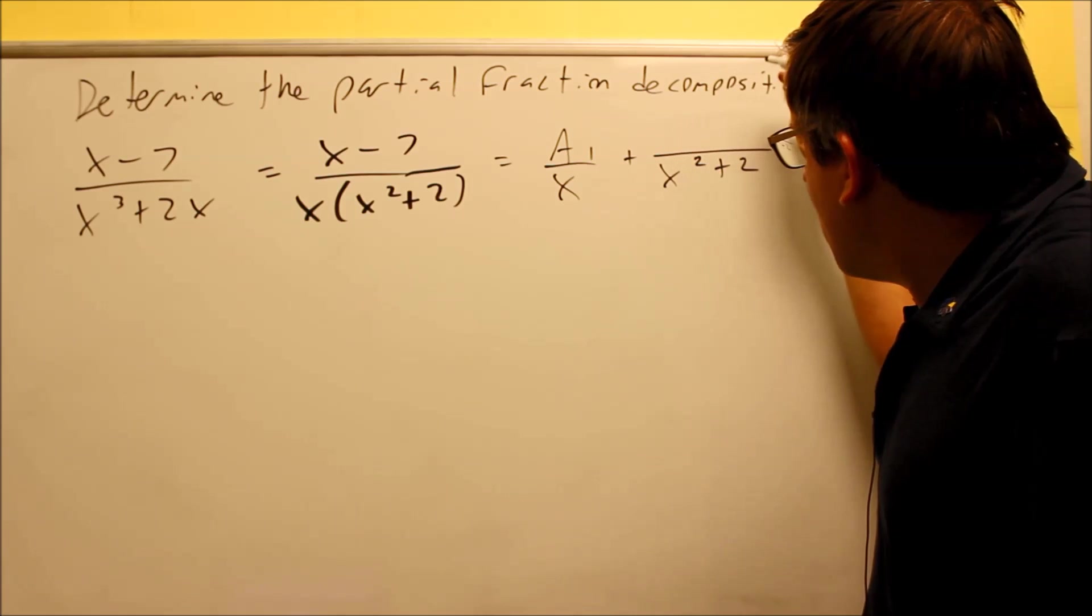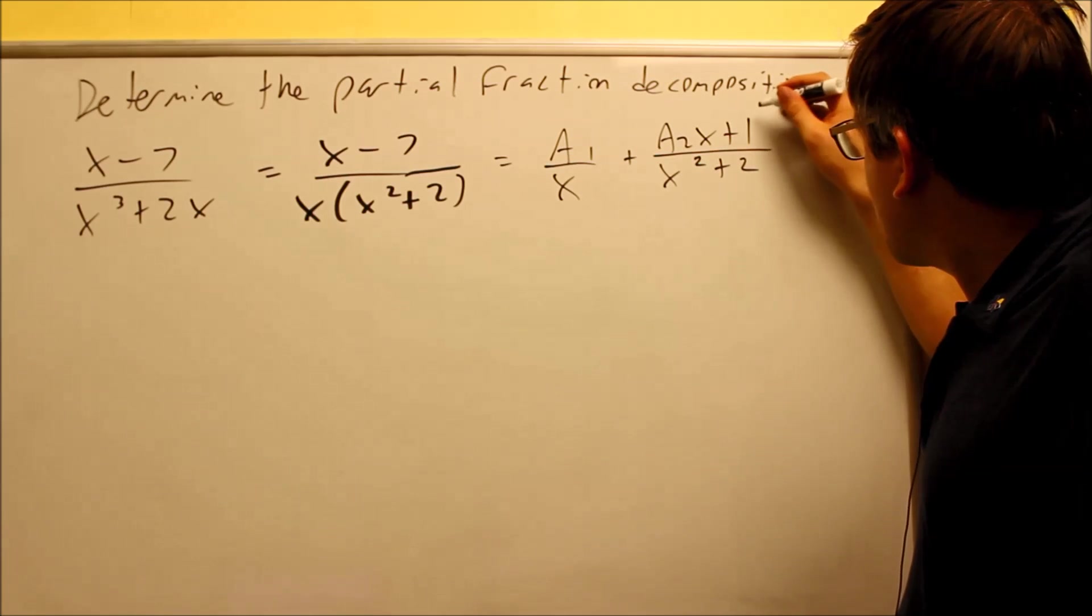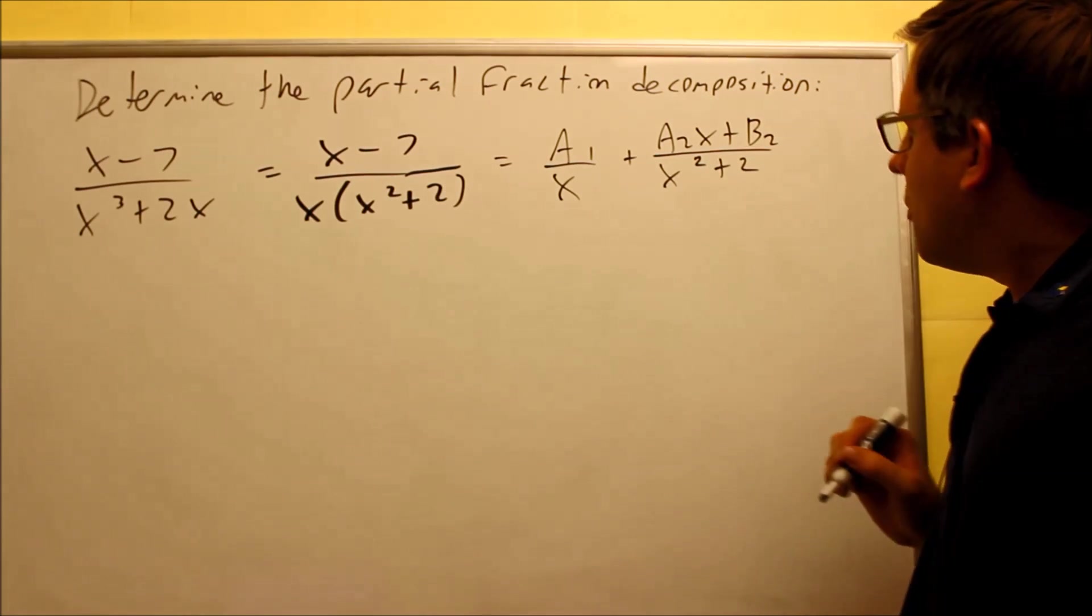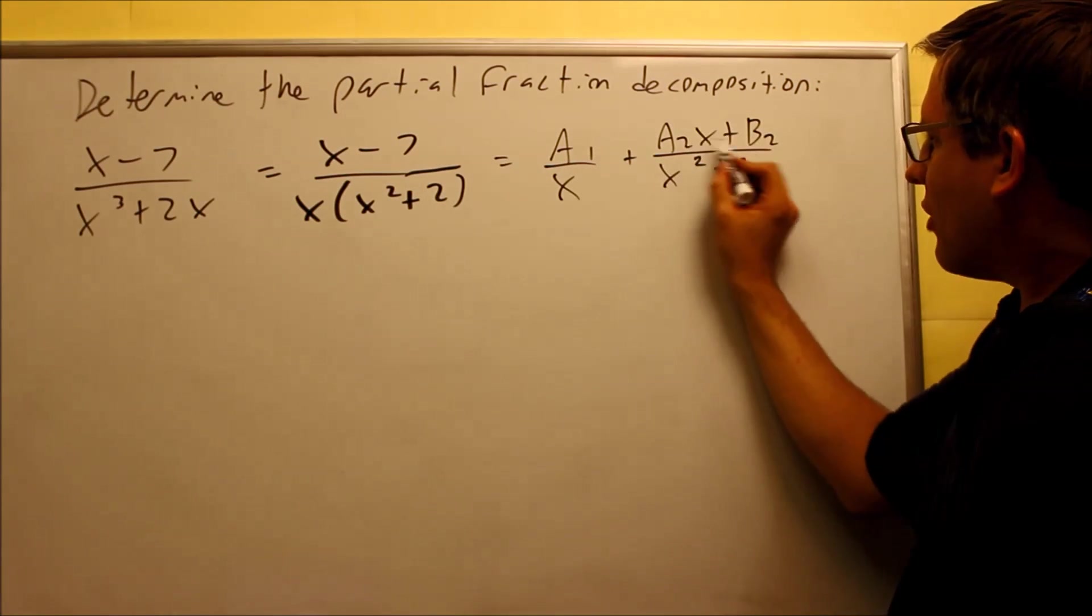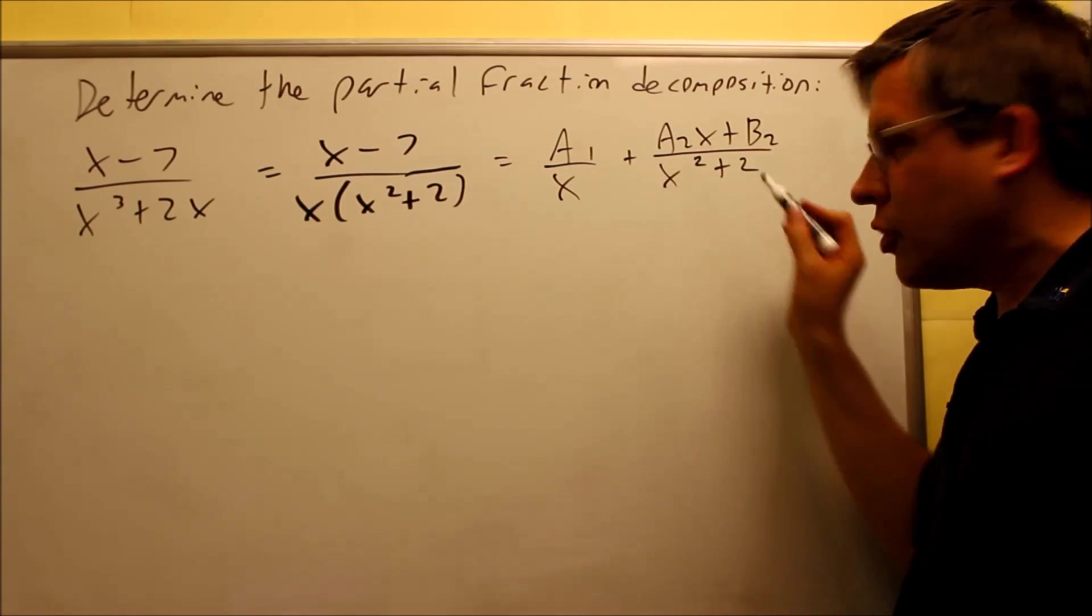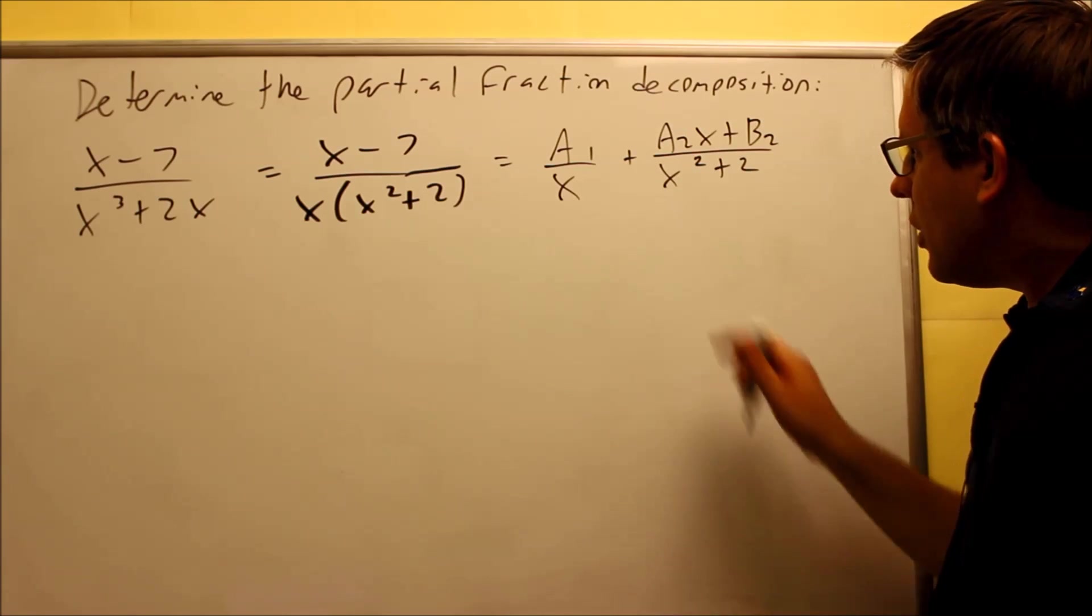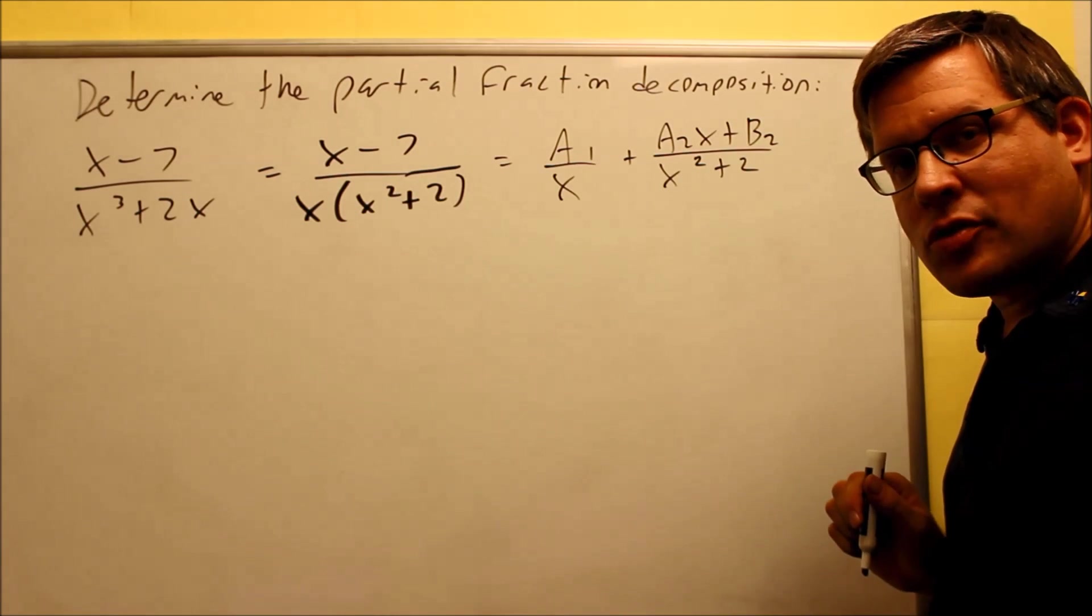Now when you have this, you have to do a2x plus, for this one, we're going to use b2 there. So we have to have an x term there. It has to be a linear term on top whenever you have an irreducible polynomial on the bottom. So this right here is going to be our setup with the decomposition.